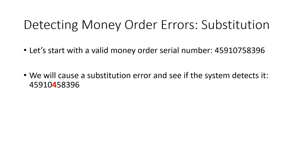The third thing on our list is to detect and possibly even correct errors. Let's start with a valid money order serial number — that is a valid serial number, so you can check it yourself for practice. Now let's say that we cause a substitution error and see if our system detects it. Remember, to detect an error, what we'll have to do is run the validation process on this serial number. What we're hoping for is that this number will come back as invalid. If that happens, that means we detected the error, because we saw that the erroneous serial number was not valid.